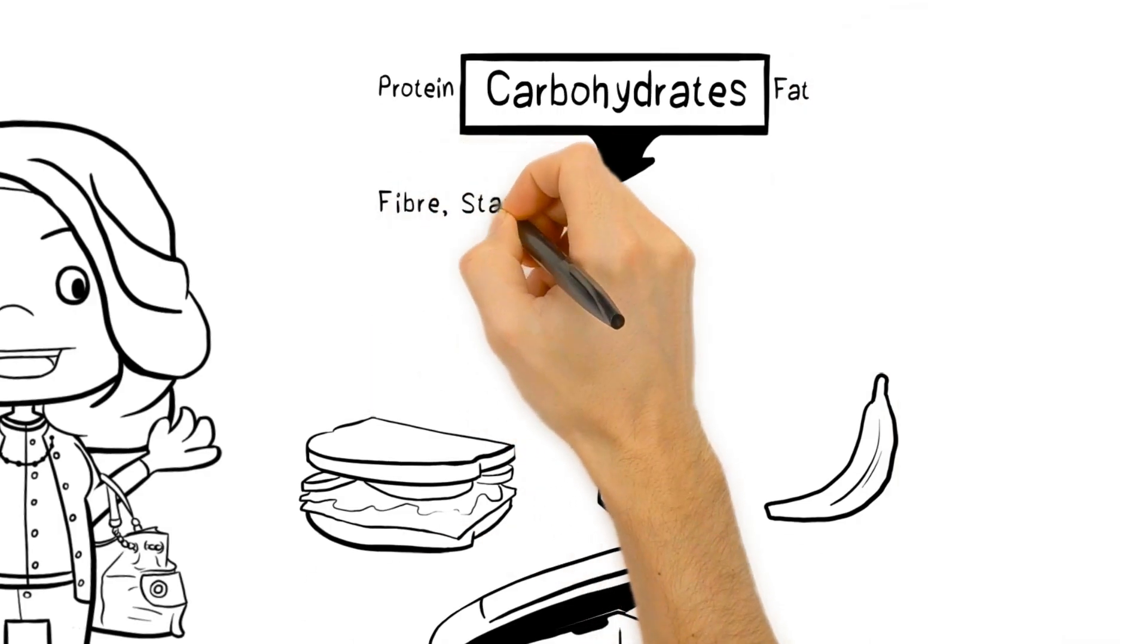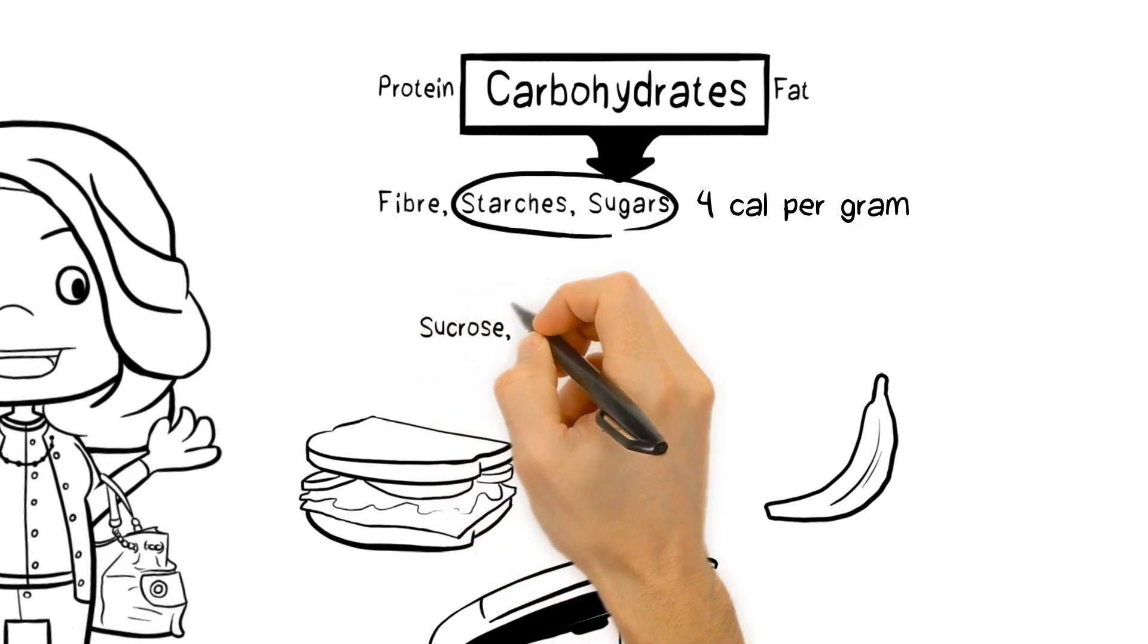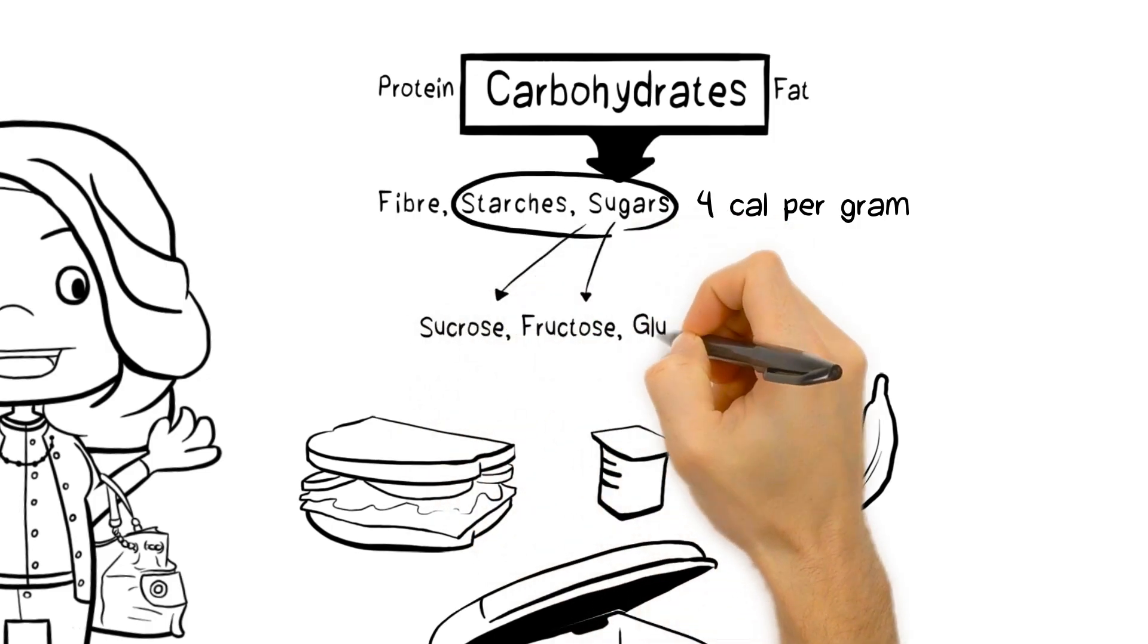Carbohydrates include fiber, starches, and sugars. All sugars and starches provide four calories of energy per gram. The sugars in her lunch include sucrose, fructose, glucose, and lactose.